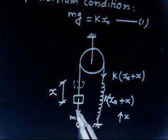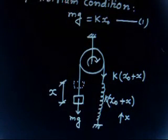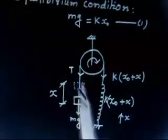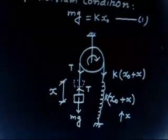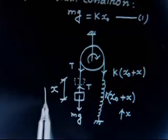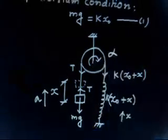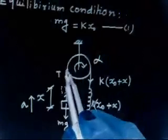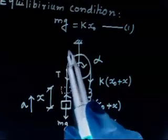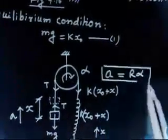This block has a tendency to go up, and this disk will have a tendency to roll this side. So the tension on each side of the pulley will be different — let us say tension on one side is T1 and the other side is T2. The block has acceleration A upward. The disk has angular acceleration alpha. This is a case of pure rolling, so the contact point has acceleration A equal to R alpha. So A equals R alpha.